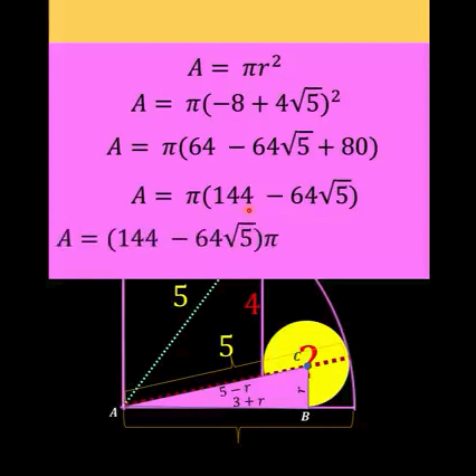And so for our final answer we have the quantity (144 - 64√5)π which is approximately equal to 2.8 square units. And this is now the area of our small yellow circle.